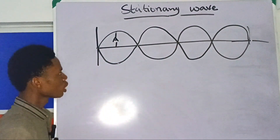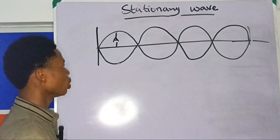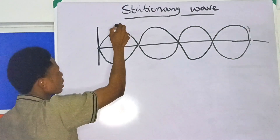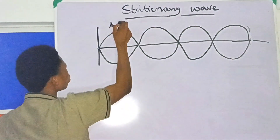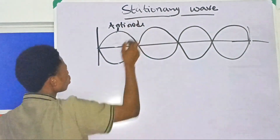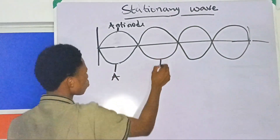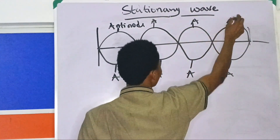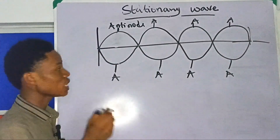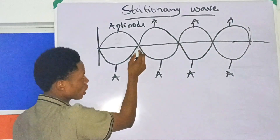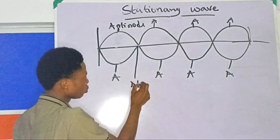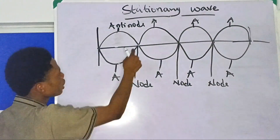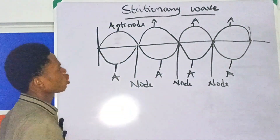In a stationary wave, the point of maximum displacement is called the antinode. All these points of maximum displacement are antinodes. While the point of no movement or no displacement is called the node. The place where the waves intersect with no movement is called the node. So the point where there is no displacement is the node, and the point of maximum displacement is called the antinode.